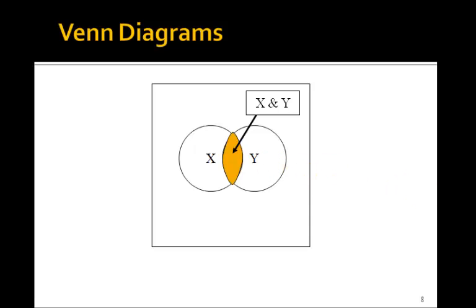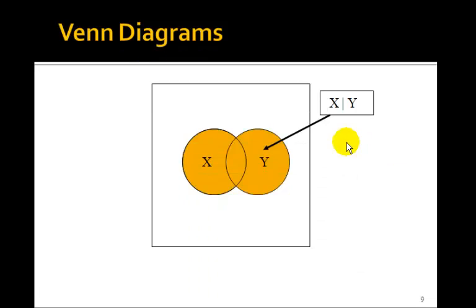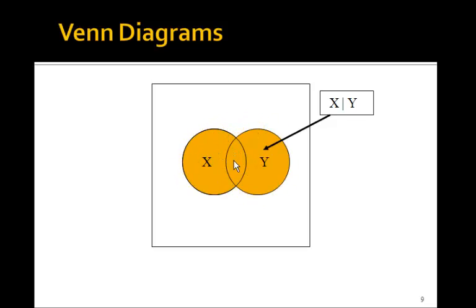What would x OR y look like? We just color in both of them — this is all of x, this is all of y. That is, y is true here, x is true here. So this colored area, including the overlap, represents x OR y. That is, either x is true or y is true or both.